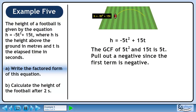The greatest common factor of 5t squared and 15t is 5t. Pull out a negative since the first term is negative. The factored form is minus 5t times t minus 3.